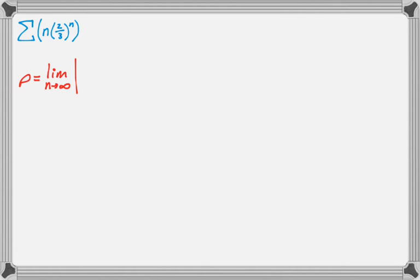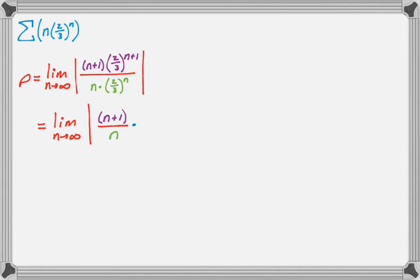So first thing I need to do is calculate rho. So rho is going to be the limit as n approaches infinity of the absolute value of the n plus first term. So I replace every n that I see with n plus 1. So that's going to be n plus 1, 2 thirds to the n plus 1. And then I divide by just the nth term. So that's n times 2 thirds to the n. And one of the things I really like about this test is that a lot of things are just going to cancel out at this point. So I'm going to cancel.